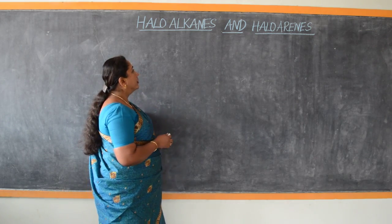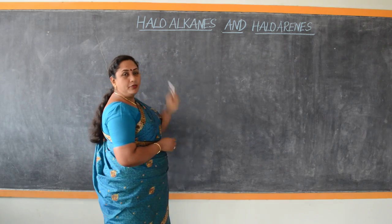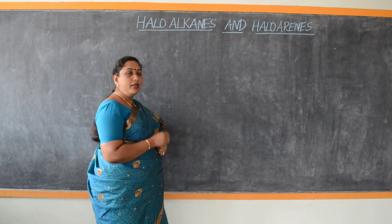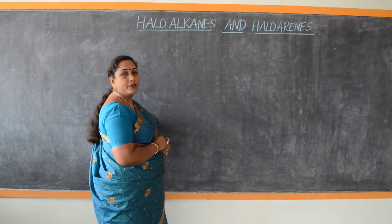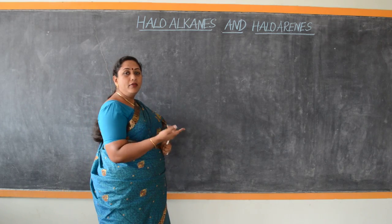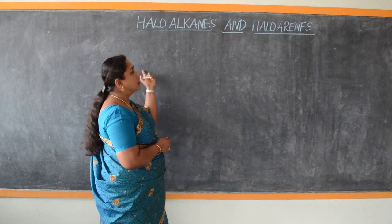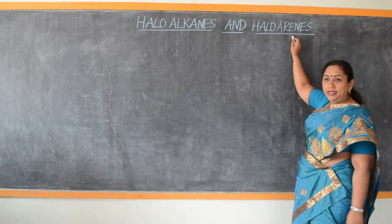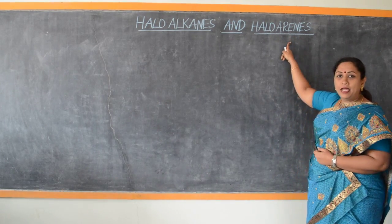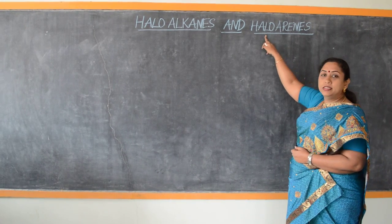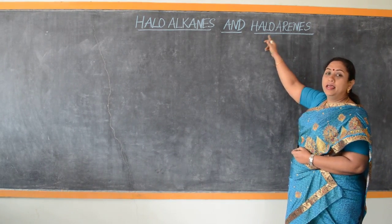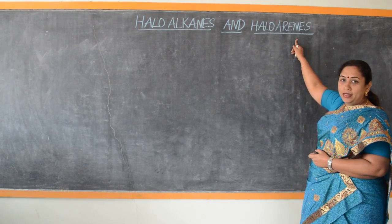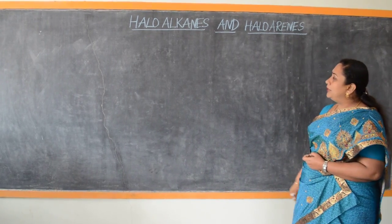Haloalkanes are alkanes which contain halogens in them — that is, alkyl derivatives of halogens. Similarly, haloarenes are aromatic hydrocarbons which contain halogens in them. Therefore, they are the monohalogen derivatives of aromatic compounds, namely derivatives of benzene.